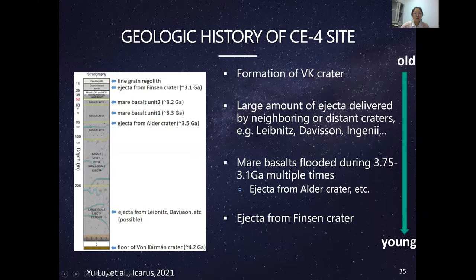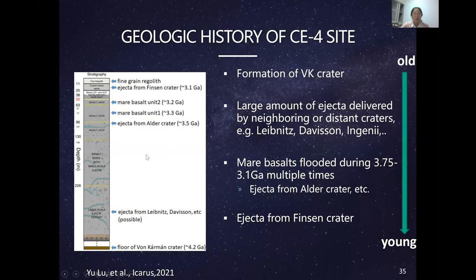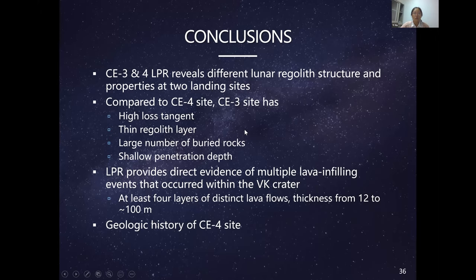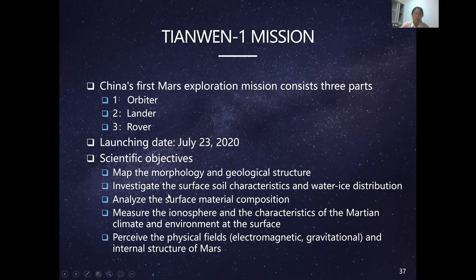In summary, the LPR reveals very different lunar regolith structures and properties at the Chang'e 3 and Chang'e 4 landing sites. The LPR also provides direct evidence of multiple lava infilling events within Von Kármán crater. The radar data additionally informs the time sequence of events that occurred within the crater.